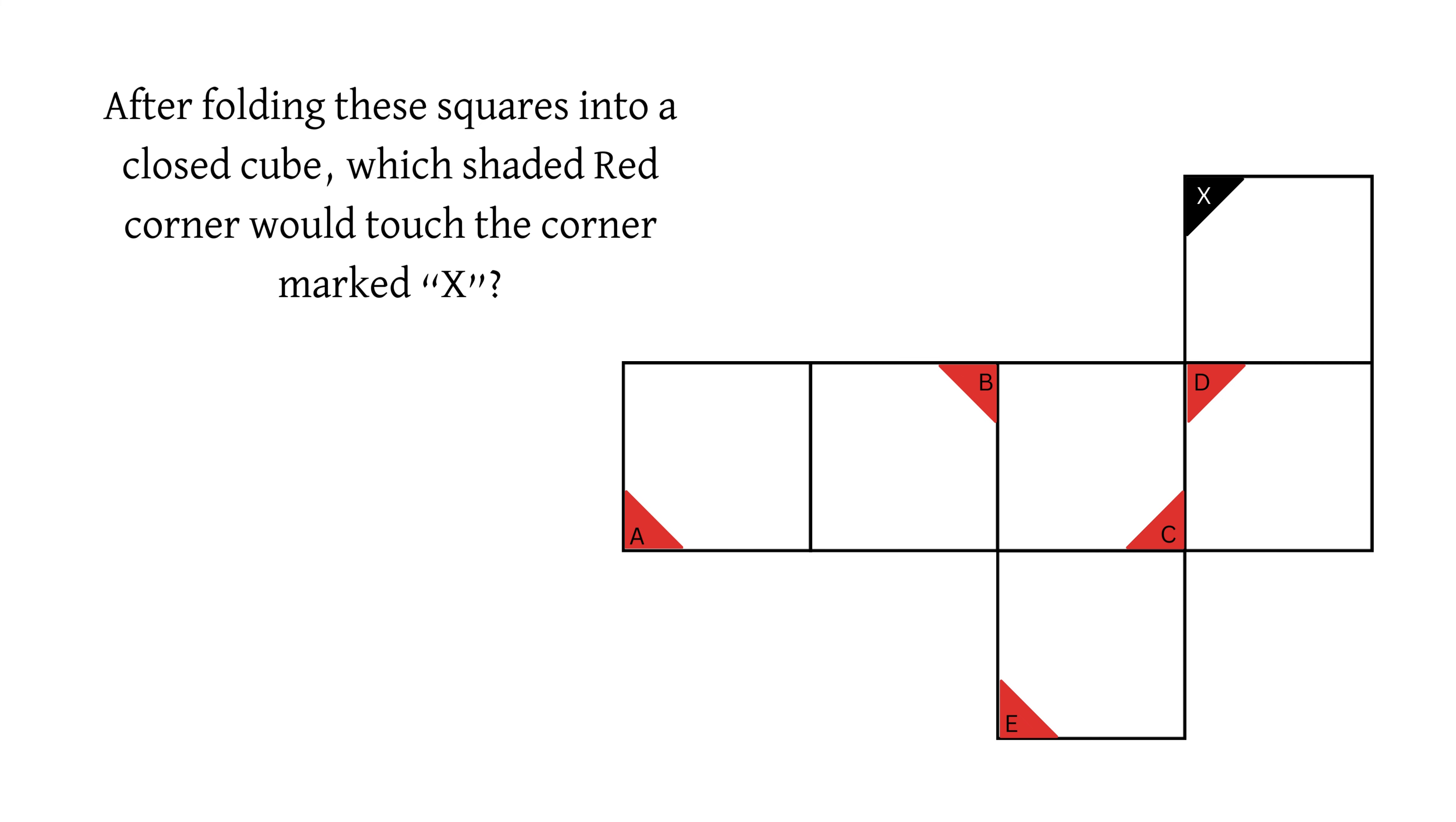Looking at the flattened cube, I like to start with the squares touching the square with the X. If the squares are touching but the red corner is not touching the X corner, we can eliminate it as they never will touch.